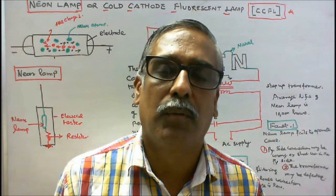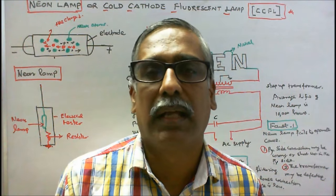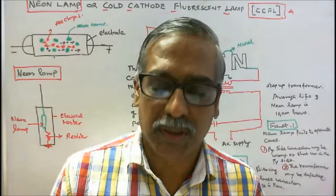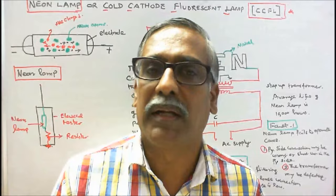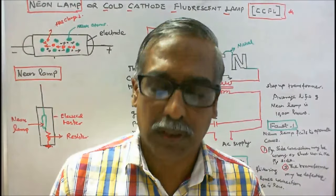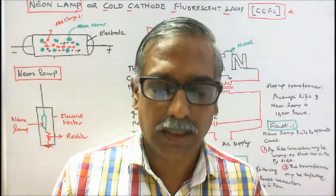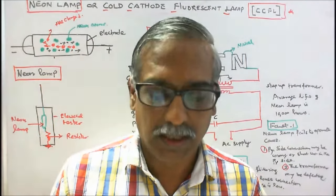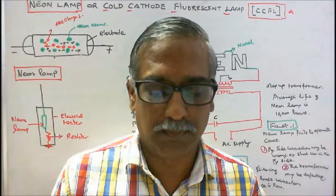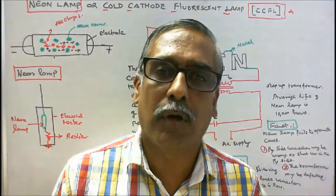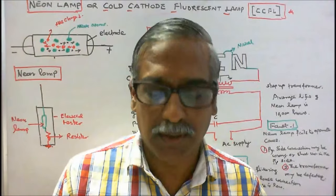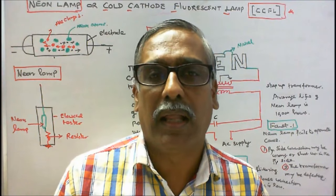There are two types of cold cathode fluorescent lamps: neon lamps and neon tubes. Neon lamps are used in indicators, night lamps, and polarity testers. They are generally of five watts. They consist of a glass bulb filled with neon gas and give orange-pink light. The electrodes are made of iron, steel, or copper, spaced a few millimeters apart. The lamp efficacy lies between 15 to 40 lumens per watt. A series resistor is connected in series to control the magnitude of current — for example, in an electrical tester.